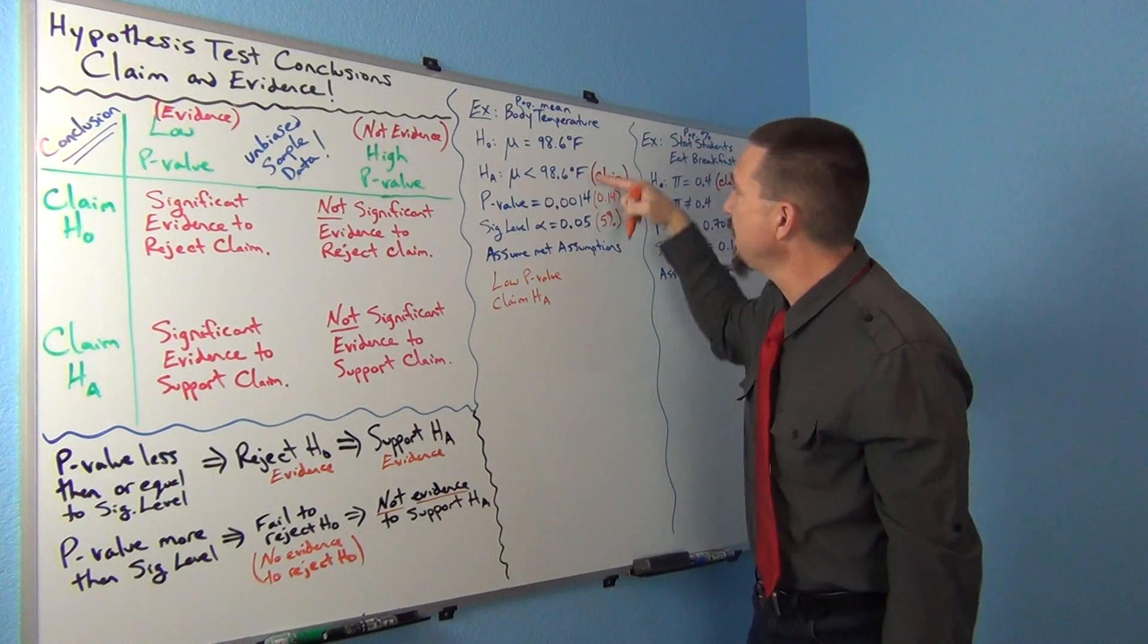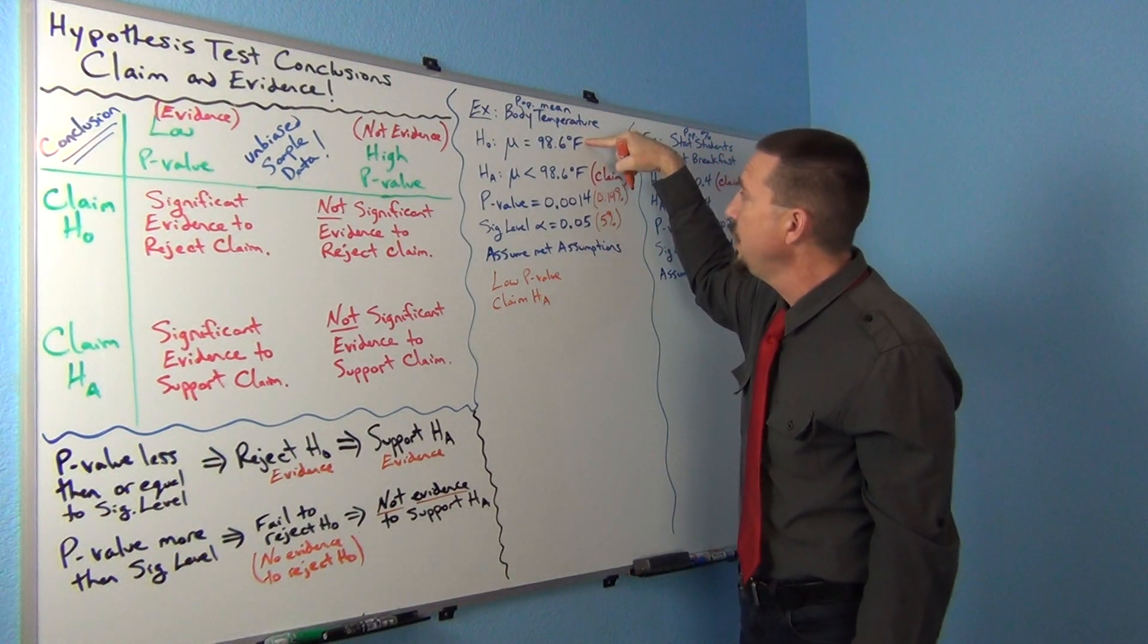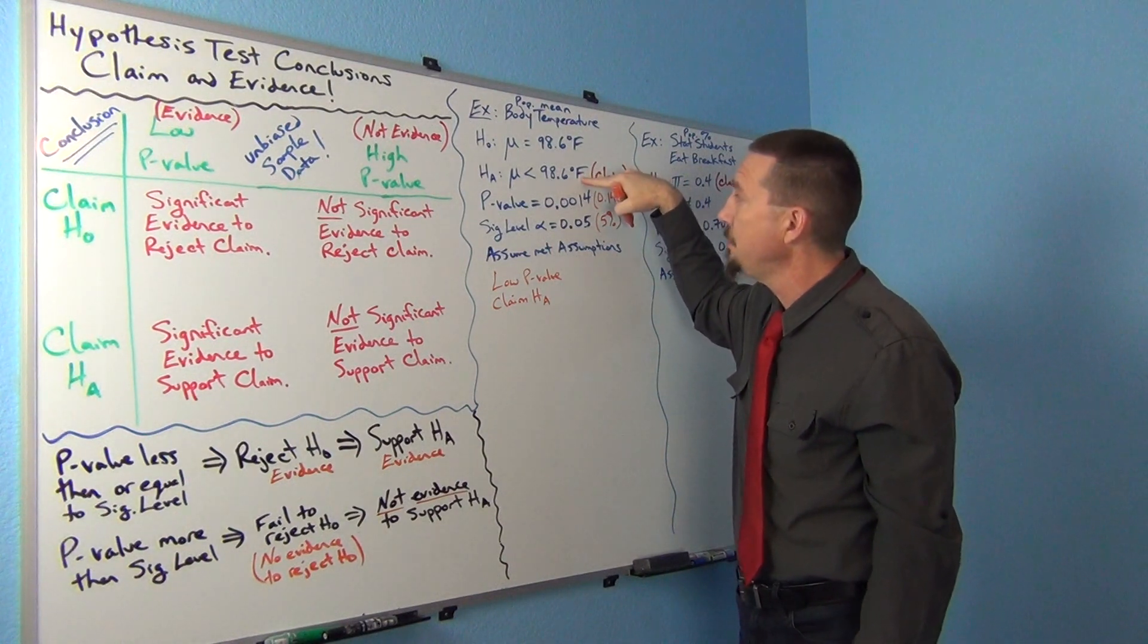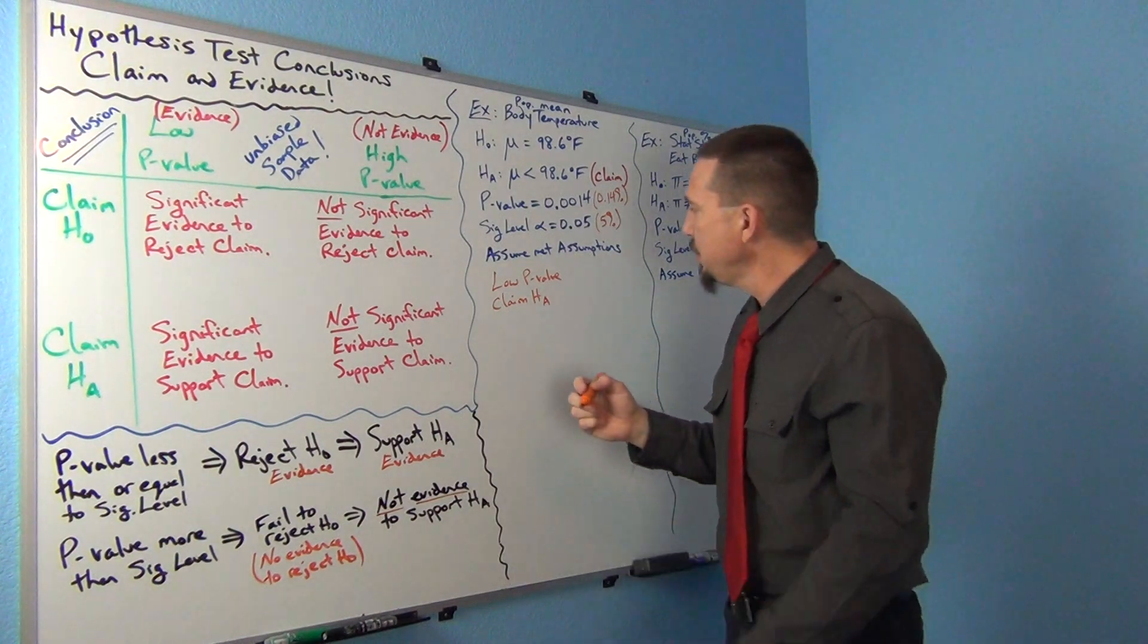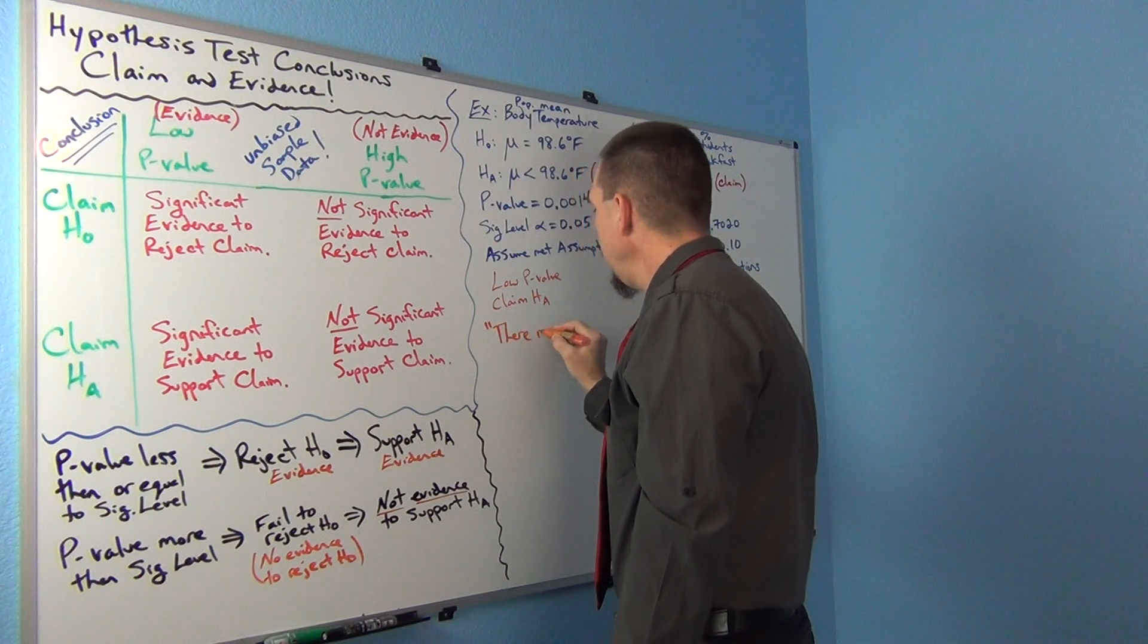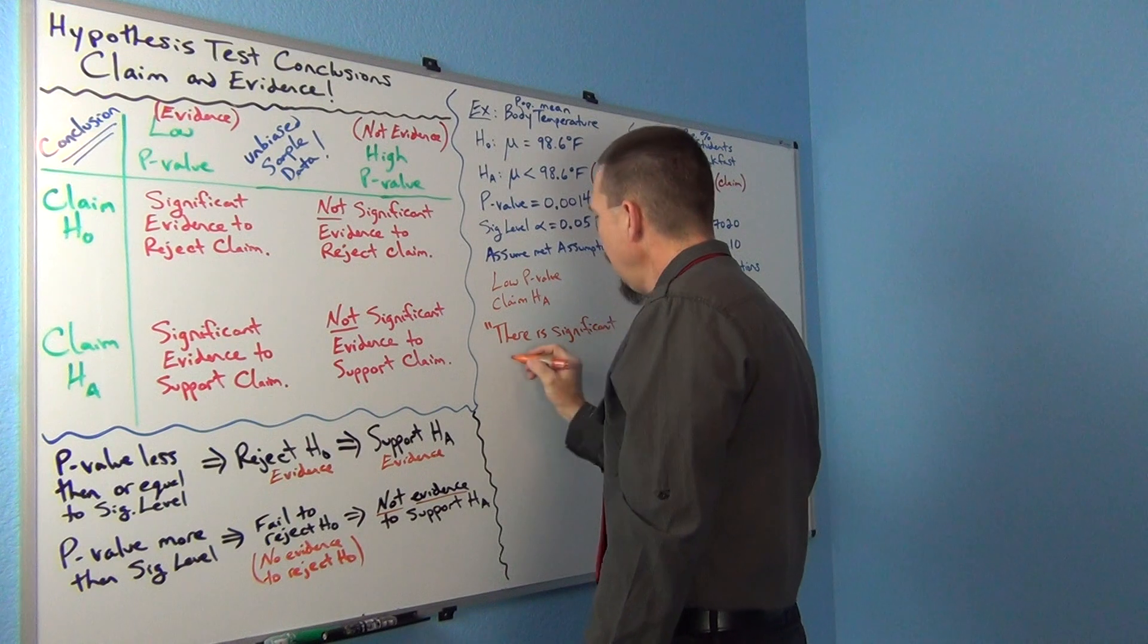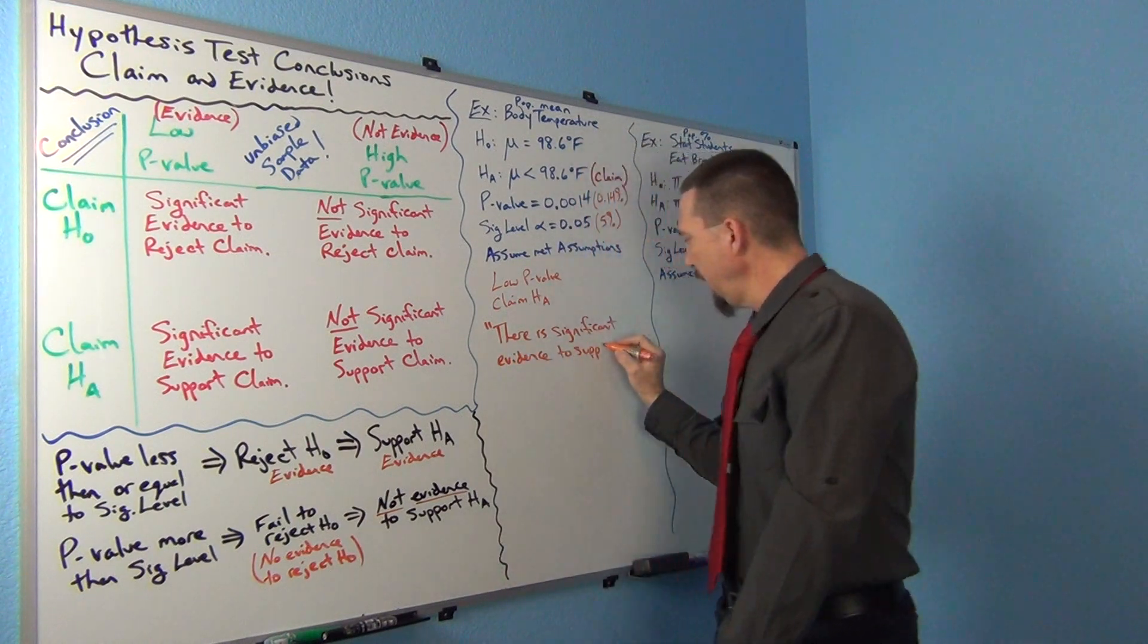So my conclusion should be there is significant evidence to support the claim. The low p-value means I'm rejecting the null hypothesis. I think the null hypothesis is wrong, which means I'm kind of supporting HA. I think that means HA might be correct. So again, I'm supporting HA. So my conclusion should be there is significant evidence to support the claim.